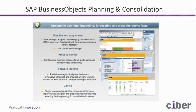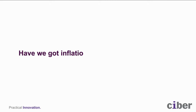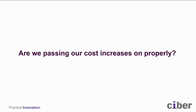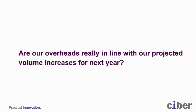Having talked about the planning tool, it is the Cyber formula that vitally leverages this by providing a link between big business challenges and technology. For example, have we got inflation under control — are we passing our cost increases on properly, or are we going backwards? Are our overheads really in line with our projected volume increases for next year? You'll see how to answer such challenging questions in the demonstration section that shows the Cyber formula in action.